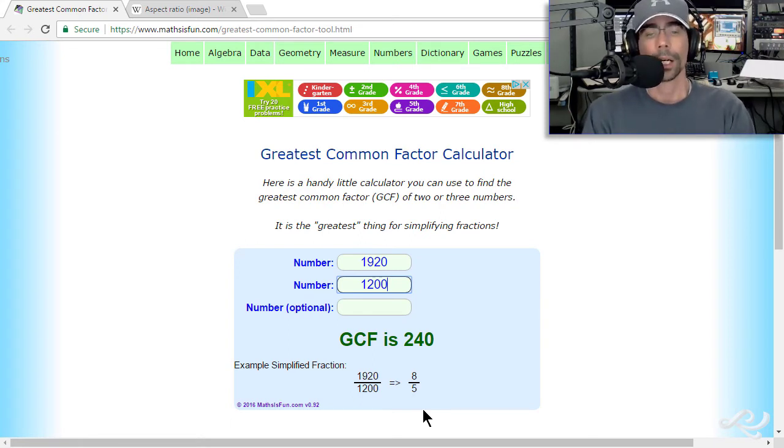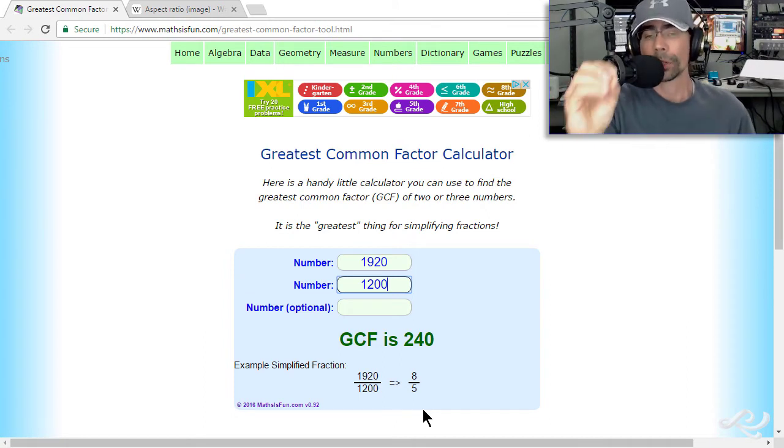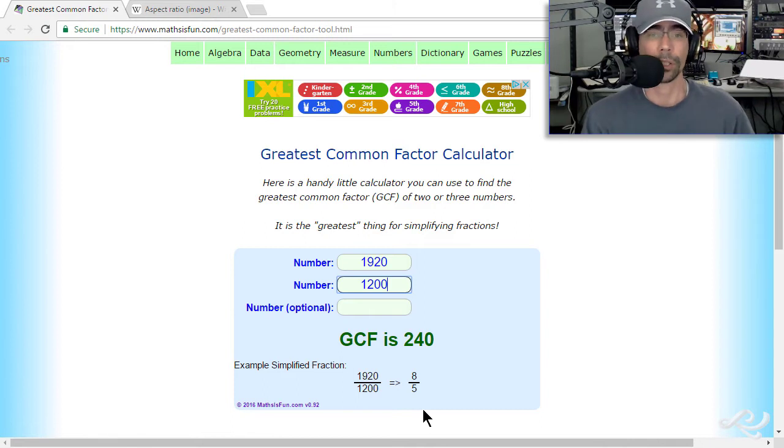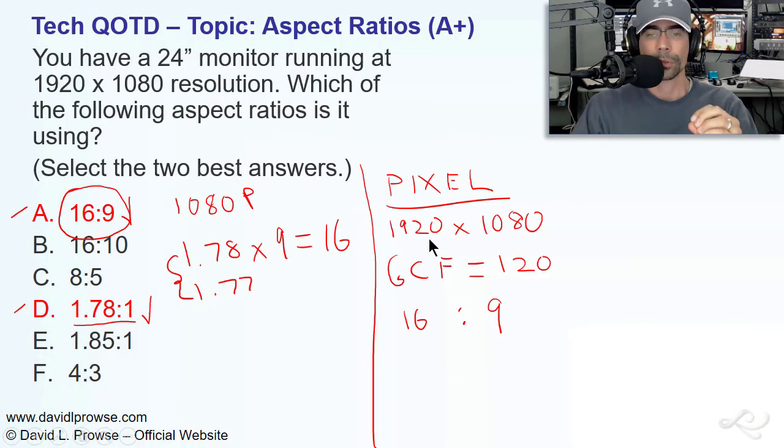which is also 16:10. If you've seen that, eight to five is the accurate measurement for that. That's the accurate name of the aspect ratio, but you might also see 16:10. So, there's another example. So, you can plug any resolution in here and find out the GCF and find out the aspect ratio right from this site if you don't want to do it on your own.